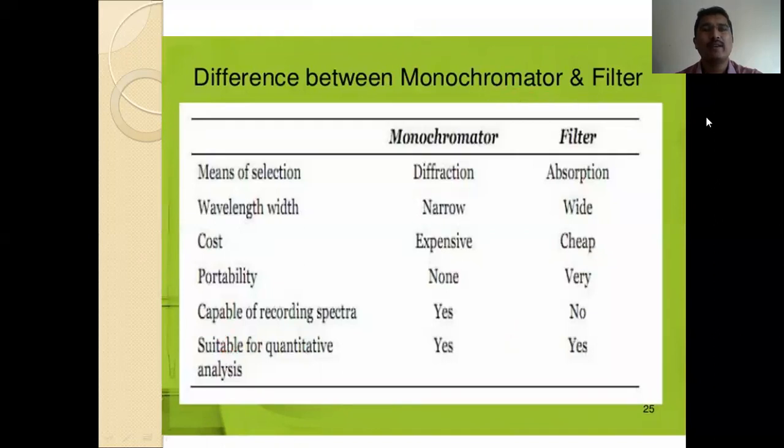Difference between the monochromators and the filters. These are the monochromators, these are the filters. Means of selection, wavelength with cost, capability. Here, diffraction, absorption, like this. Wavelength width is narrow, then we use filter wide. If the cost of the monochromator is expensive, filter is cheap. Capability, monochromator, no, here, yes. Capable of recording spectra, yes here, no. Suitable for quantitative analysis in the monochromator, yes, and in filter also, yes.